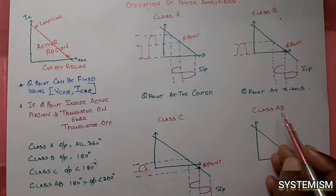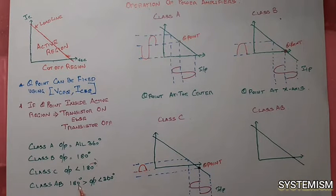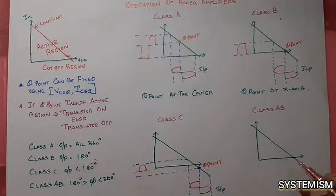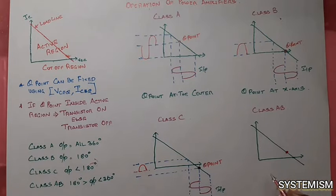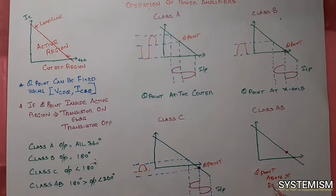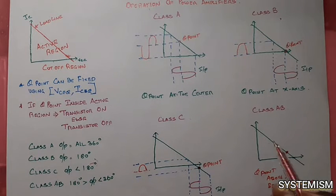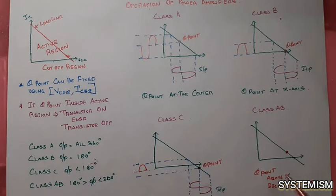For class AB amplifier, the output is more than 180 degrees but less than 360 degrees. So we fix the Q point above the X axis but below the center of the active region. With the Q point below the center of the active region, you can obtain output of above 180 degrees but below 360 degrees of your input signal.